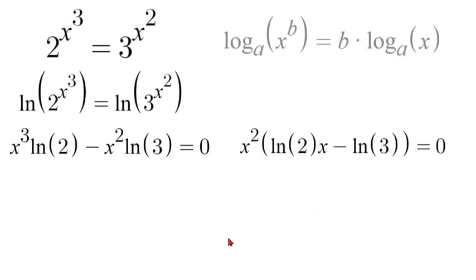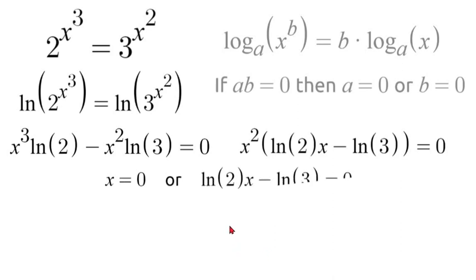Now if we apply some multiplication properties, if we have a times b equal to 0, then a is equal to 0 or b is equal to 0. So in this case we can set both sides equal to 0. So x would equal 0 because x squared equal to 0 is just 0, or we have natural log of 2 times x minus natural log of 3 is equal to 0.